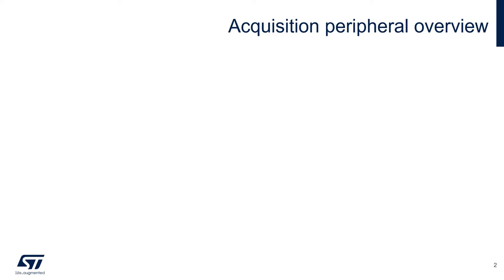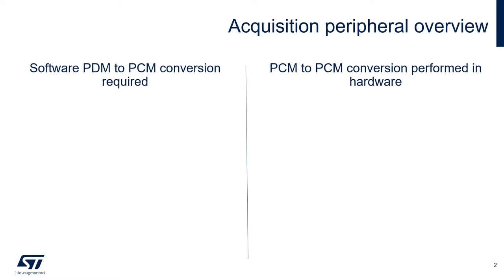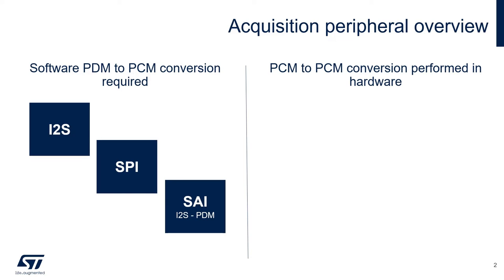Several STM32 peripherals can be used for the acquisition of a MEMS digital microphone. A first distinction to be made is between the peripherals that can acquire the microphone but PDM to PCM conversion is performed in software, and those peripherals that have PDM to PCM filtering capabilities in hardware. I2S, SPI, and SAI belong to the first group. They are able to acquire the PDM data but the conversion is then made in software using the STM32 PDM to PCM software library.